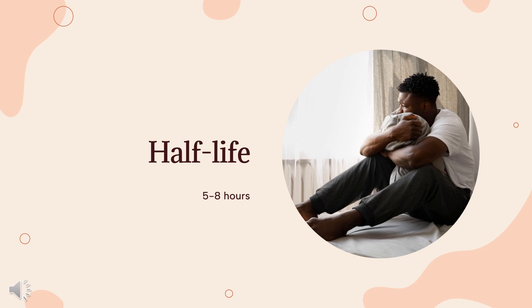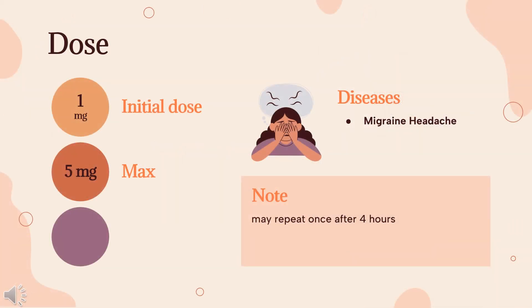Half-life: 5–8 hours. Dose for migraine: 1–2.5 mg orally at onset; may repeat once after 4 hours. Not to exceed 5 mg per day.